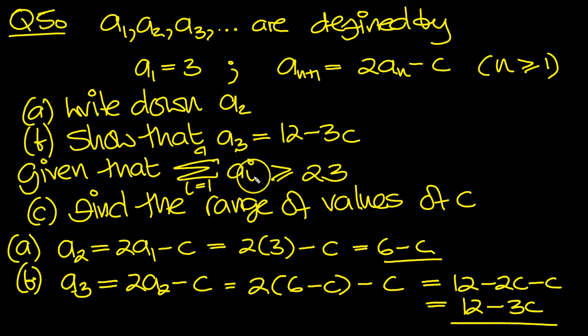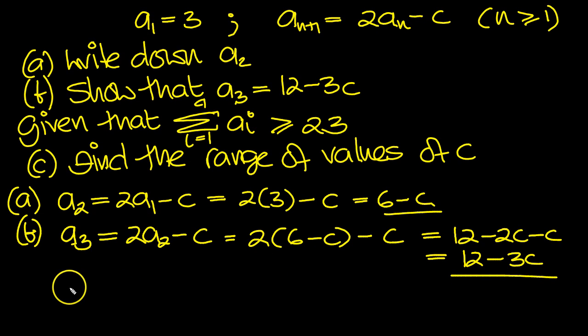Given that a(i) from 1 to 4 is greater than or equal to 23, find the range of values of c. So a1 plus a2 plus a3 plus a4 is greater than or equal to 23. a1 is 3, so put that in, plus a2, which is 6 minus c,